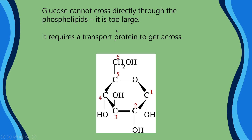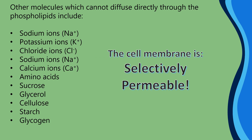Glucose is too large and also requires a transport protein — we'll cover more on this when we look at co-transport later. Other molecules or ions that cannot diffuse directly through the phospholipids include sodium ions (positively charged), potassium ions, chloride ions (negatively charged), and calcium ions. Larger molecules such as amino acids, sucrose, glycerol, cellulose, starch, and glycogen are simply too large. The ions above have a charge — that's the key distinction.